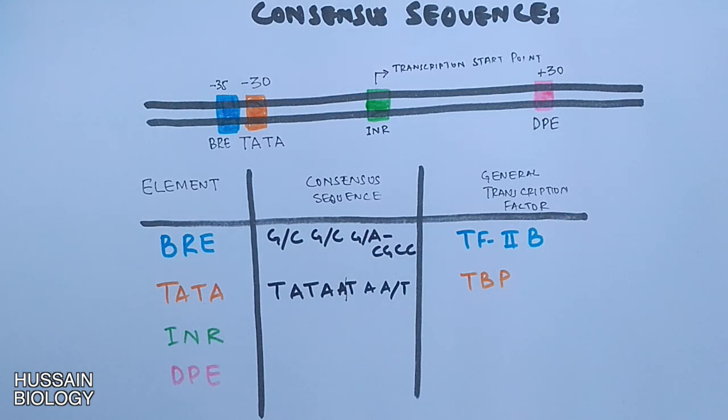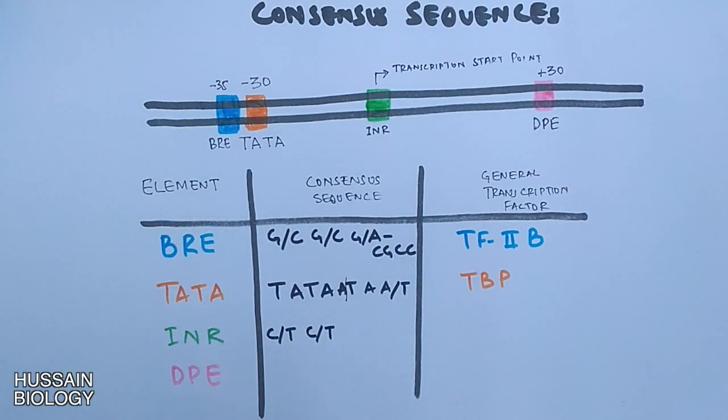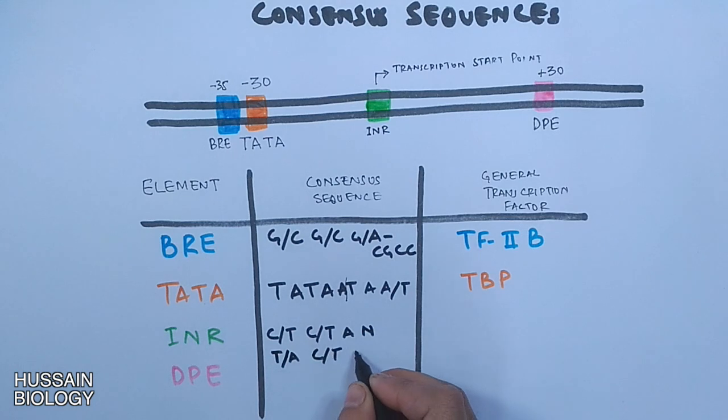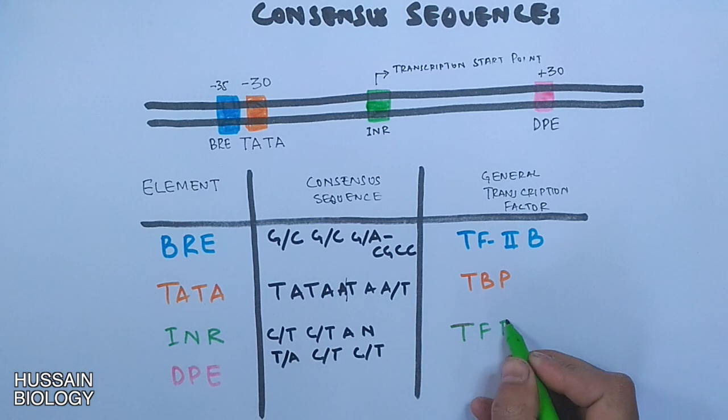Furthermore we have INR element with a sequence as C or T, C or T, A followed by any nucleotide, then T or A, C or T, and C or T. And this element is recognized by transcription factor 2D.